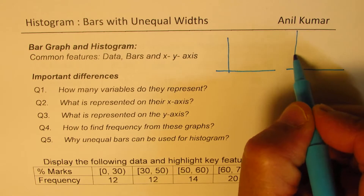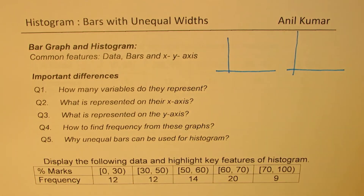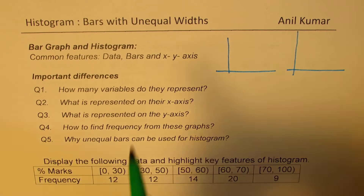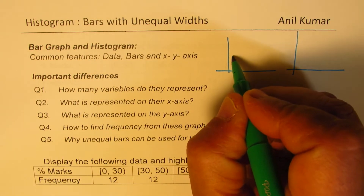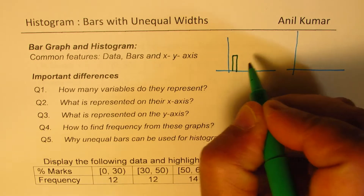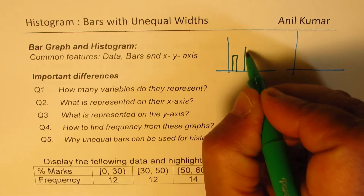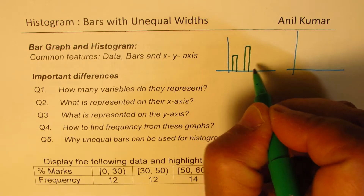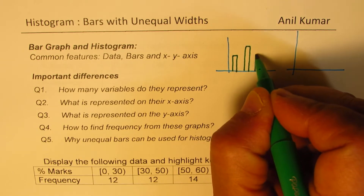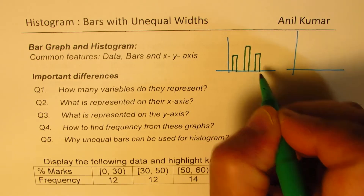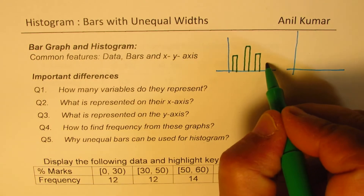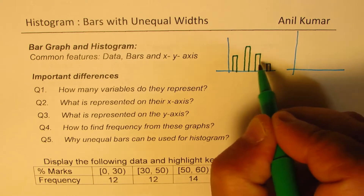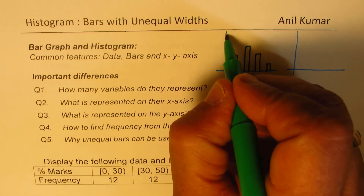Basically, they both represent some kind of information, and this information is represented with bars. So for a bar graph we may have bars something like this. Normally when we sketch a bar graph, we will have the same width for each bar, however there will be a distance in between them. Something like this represents a bar graph.